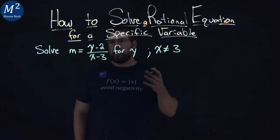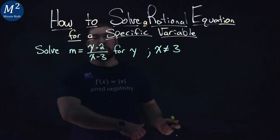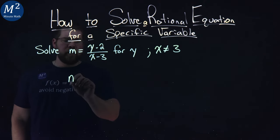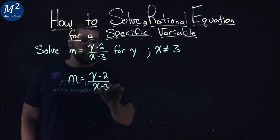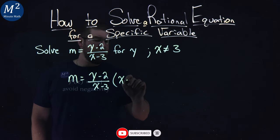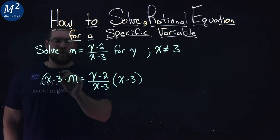Now, from here, we want to solve for y. So, basically, y is here and a whole bunch of junk. Let's move everything over to the other side. So, let's rewrite our problem here. m equals y minus 2 over x minus 3. To get rid of a number in the denominator here, I'm going to multiply both sides by that denominator, x minus 3, x minus 3.